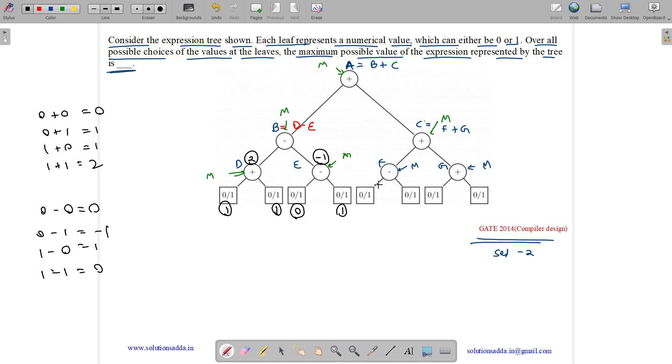For F, the maximum value for negation is 1 minus 0, which is 1. So 1 from here, 0 from here. Now for G, maximum value is 1 plus 1. So 1 from here, 1 from here, 1 plus 1 equals 2.